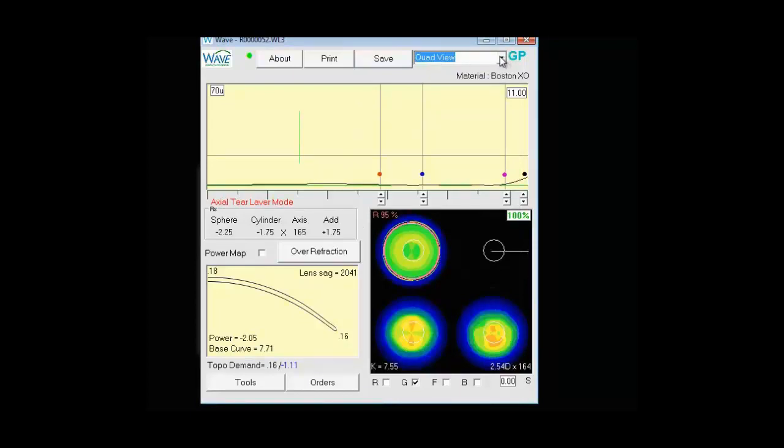Next, we have this drop-down. It defaults to quad view. Quad view is referring to what we're seeing in this lower right corner here. So quad view is showing us four views all at the same time. This is the most often used when you're designing your lenses.